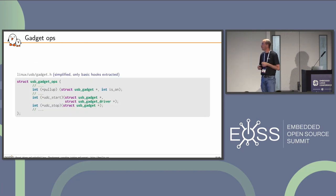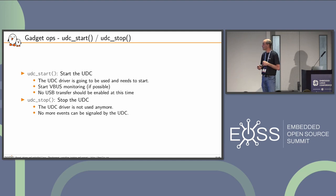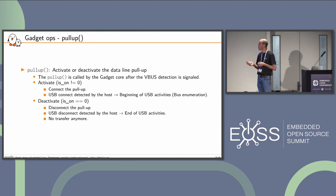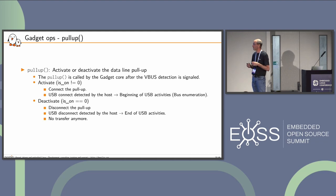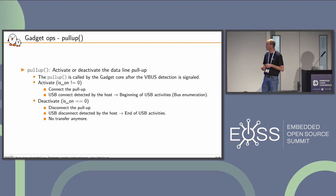The gadget operations include pull-up, UDC start, and UDC stop hooks. UDC start is called by the core when we start using the UDC driver; during this call we prepare the hardware and optionally start VBus monitoring. UDC stop has to stop the UDC. The pull-up hook is called by the gadget core to connect the data line pull-up — this is detected by the hub and the host, triggering bus enumeration, so be ready to handle those activities. On deactivation, the host detects disconnection.